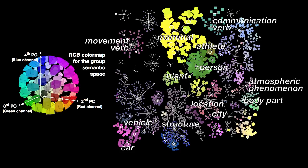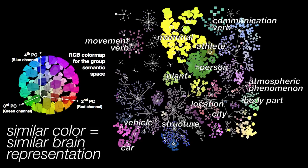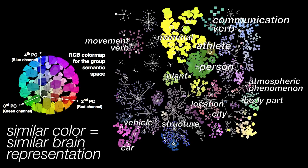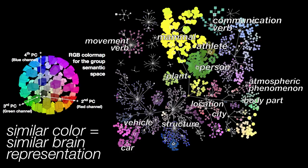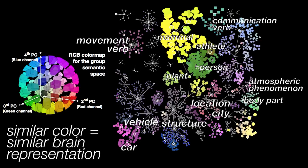This makes it so categories that are represented similarly in the brain are assigned similar colors. Here we see that people and communication verbs are represented similarly, and animals are also not so different. Vehicles and buildings and movement verbs are also pretty similar to each other, but different from people and animals.